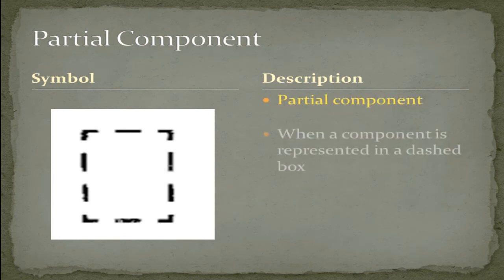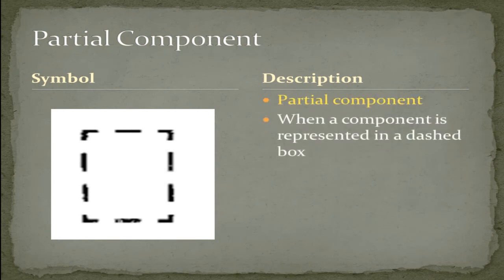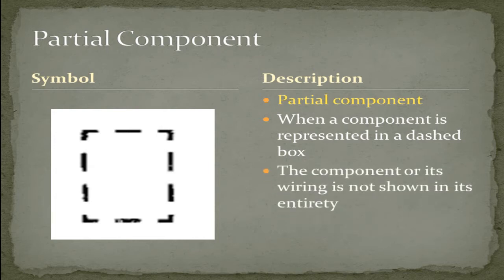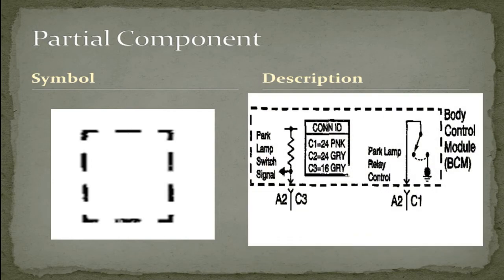Partial component. When a component is represented in a dashed box, the component or its wiring is not shown in its entirety. As represented here with the body control module. All that's being presented is the parking lamp relay control. And we know the body control module does much more than just the parking lamp relay control. Therefore, it's not shown in its entirety, represented by the dashed squared box.